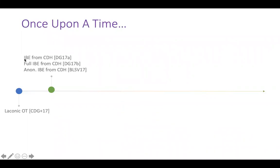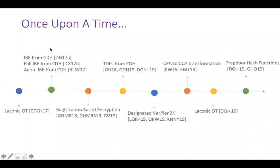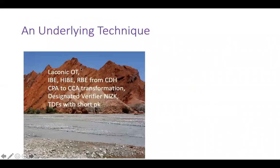Later on, this primitive and its variants found tons of applications like identity-based encryption, registration-based encryption, trapdoor functions, designated verifier zero knowledge, CPA to CCA transformation, trapdoor hash functions, and so on. And that's a ton of applications.